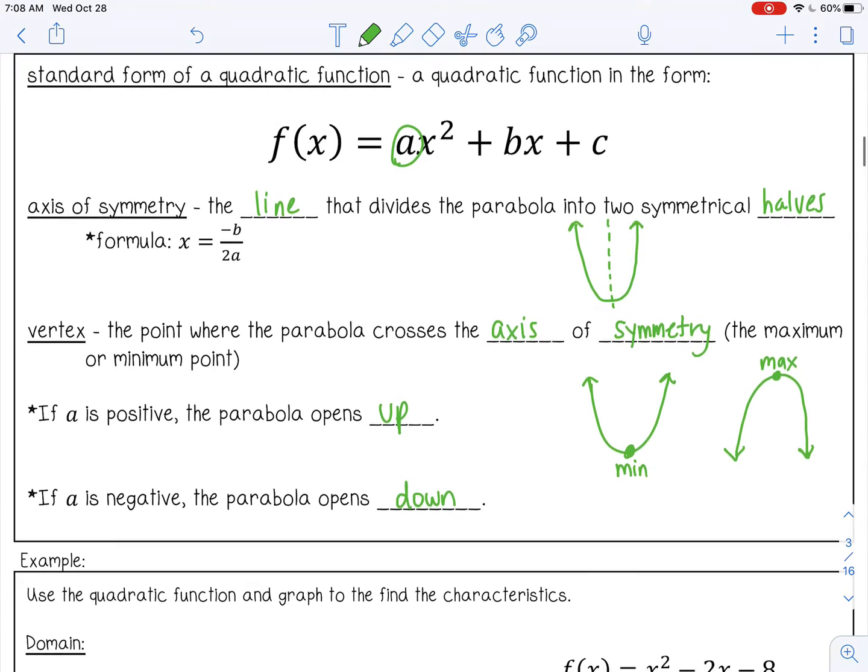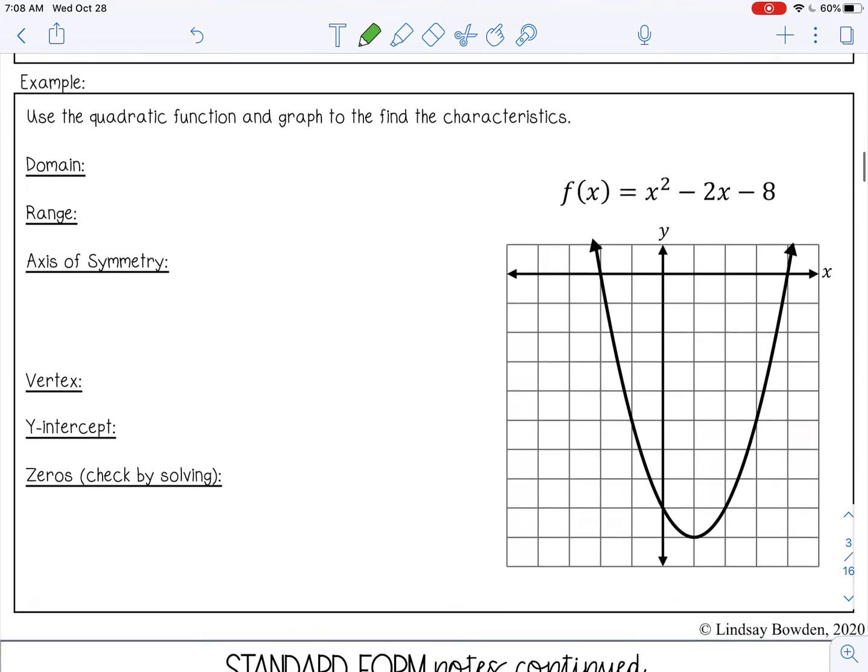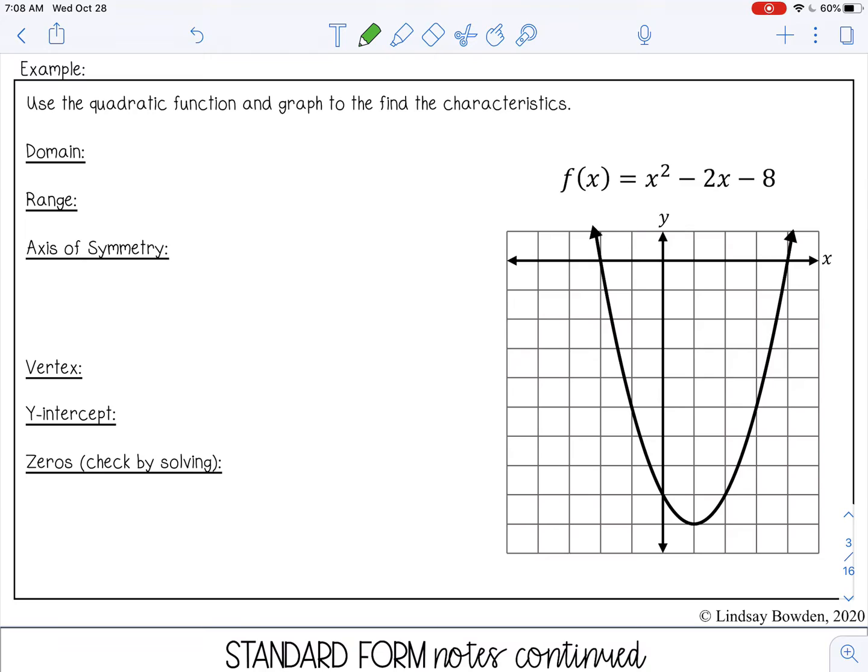Let's try an example. Use the quadratic function and the graph to find the characteristics. So first, domain. Remember domain is my x values, left and right. And as you can see, this parabola keeps going forever in this direction and forever in this direction. So it's going to have all x values, or all real numbers.